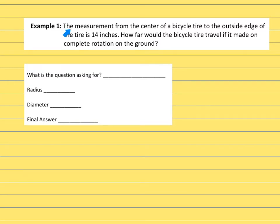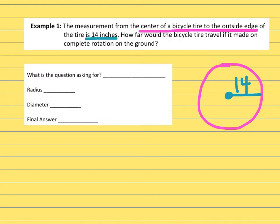The first question, example one, says the measurement from the center of a bicycle tire to the outside edge of the tire is 14 inches. How far would the bicycle tire travel if it made one complete rotation on the ground? This doesn't have a picture, so for me, I'm a visual learner. So I'm going to draw a picture of this object. It says we have a bicycle tire. Tires are round. And the question is giving us information from the center of the bicycle tire to the outside edge. From the center of the circle to the outside edge is 14 inches. So I'm going to label that 14 inches.